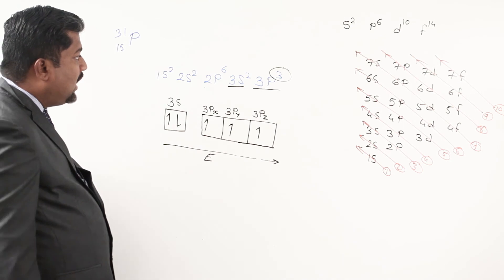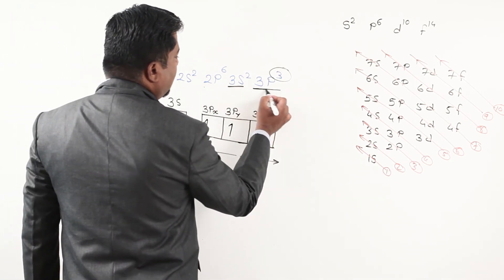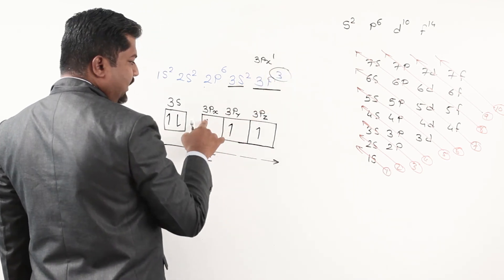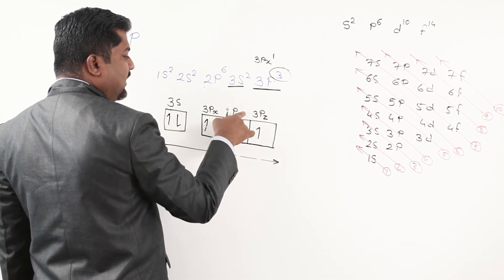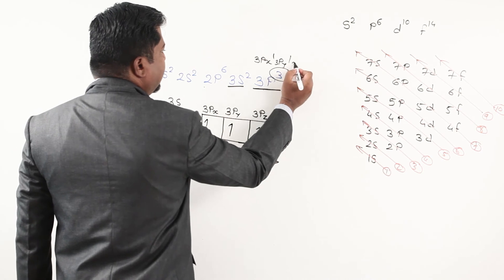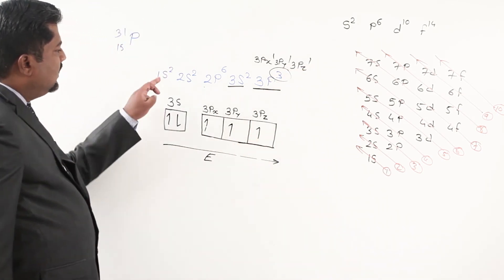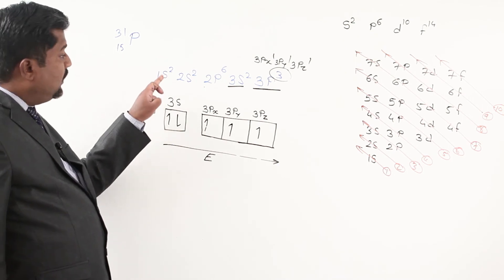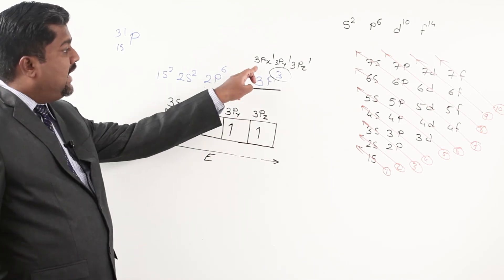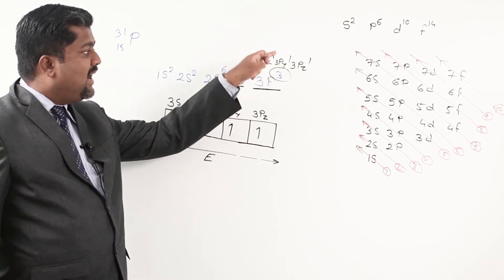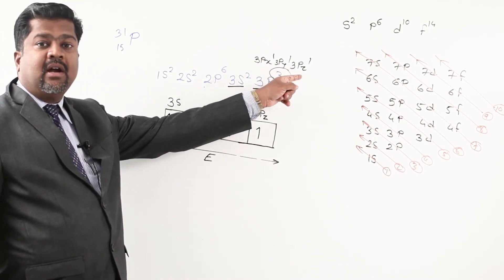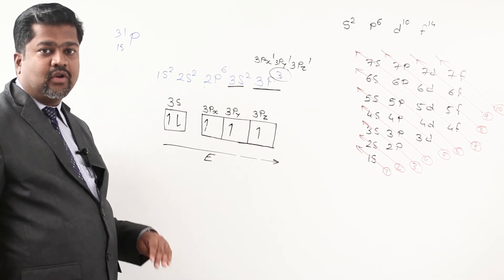Now check out the chlorine electronic configuration that we carried out earlier — atomic number 17. We had written 3p5. For 3p5 we already adjust 3 electrons as one each in 3px, 3py, 3pz. The fourth electron — since no degenerate orbital is empty — starts pairing. It pairs into 3px, fifth electron pairs into 3py, and the sixth electron remains unpaired in 3pz.